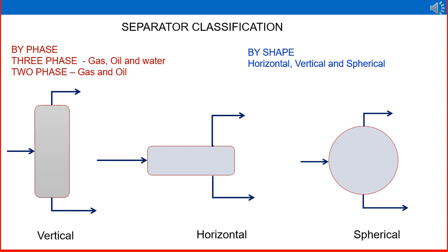Separators are classified by phase — gas, oil, and water — as either two-phase or three-phase. By shape, they are horizontal, vertical, or spherical. In a company, different operations use atmospheric separators, medium pressure separators, or high pressure separators, according to the well fluid pressure.